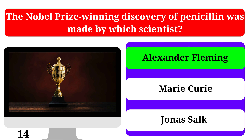In what ancient text is the phrase 'to every action, there is an equal and opposite reaction' first found? Newton's Principia, Aristotle's Physics, or Euclid's Elements. The correct answer is Newton's Principia.